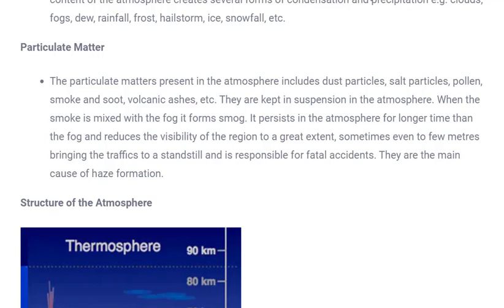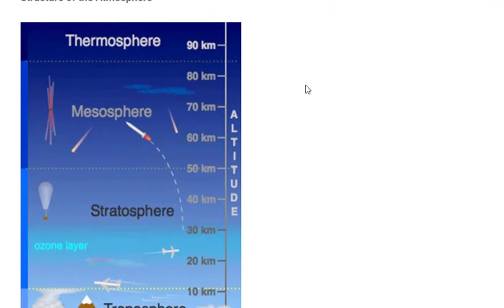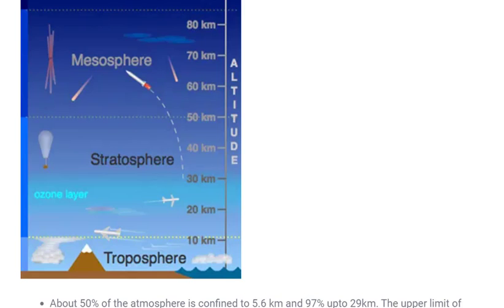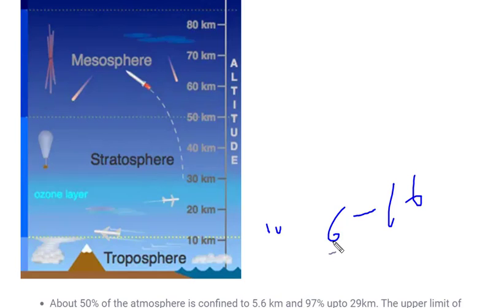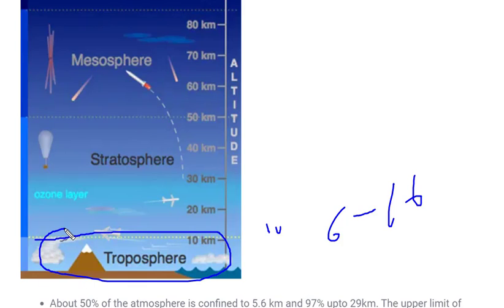The atmosphere consists of several layers, each with its own height and characteristics. Starting with the lowest layer — the troposphere. Different books give different data, around 10 km or 6 to 16 km in height; you just need to know it lies below 20 km. The important characteristic of the troposphere is that every weather phenomenon — whether fog, cloud, dew, frost, rainfall, thunder — every weather phenomenon occurs in this layer only. All heavy gases are present in this layer.